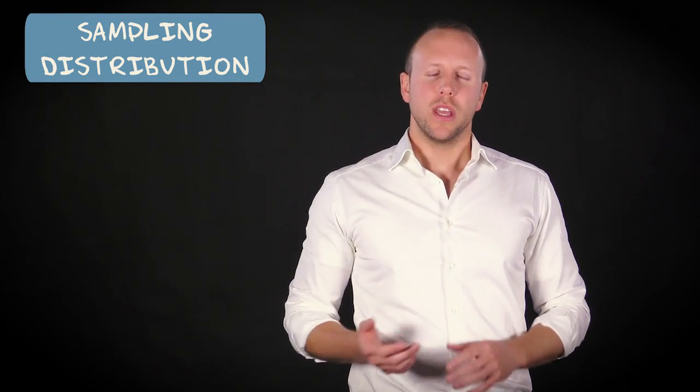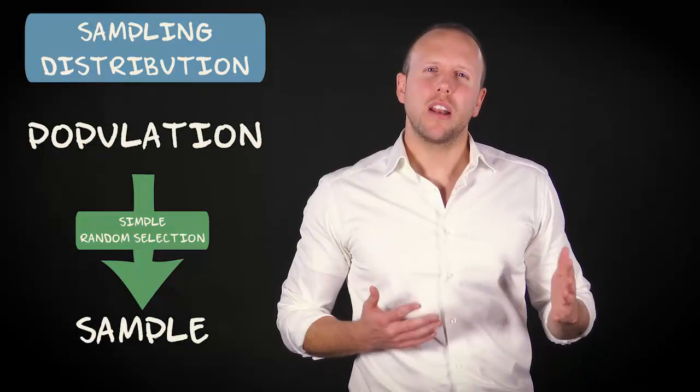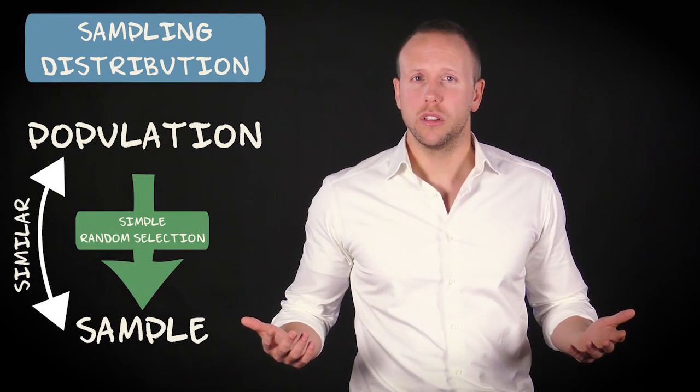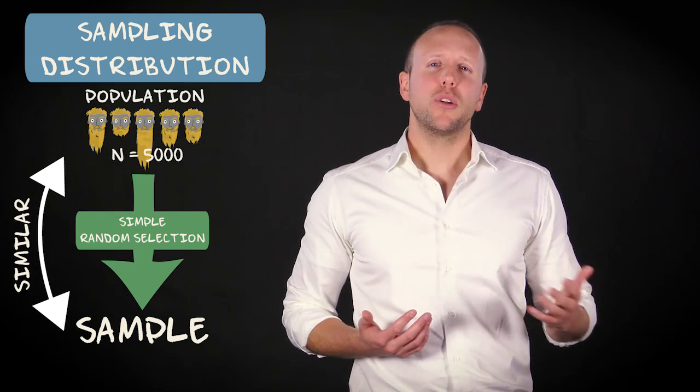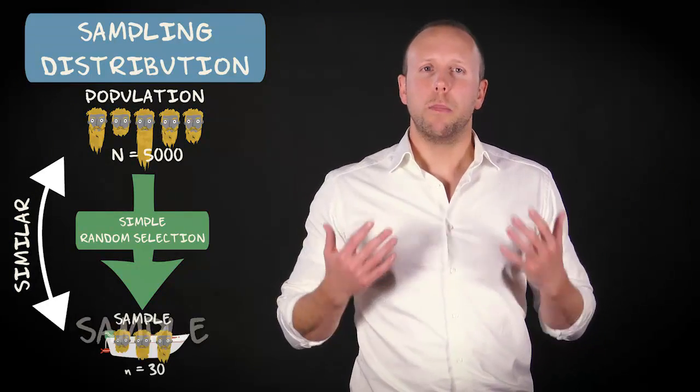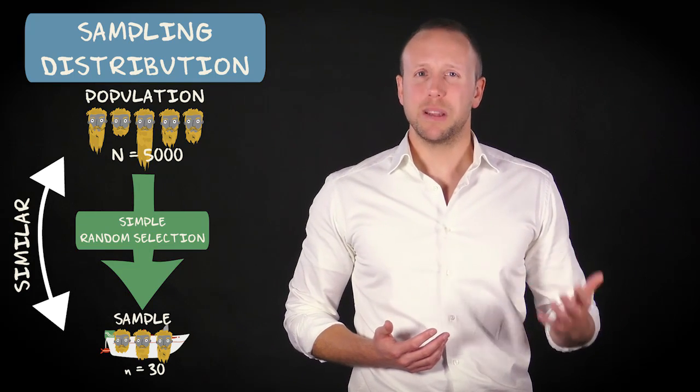The reasoning goes like this. If you draw a simple random sample from a population, it is very unlikely that the sample will strongly differ from the population from which it is drawn. In our case, the people going to the Festival of the Beards, they form our population. A boat with 30 randomly selected people from this population forms a simple random sample.